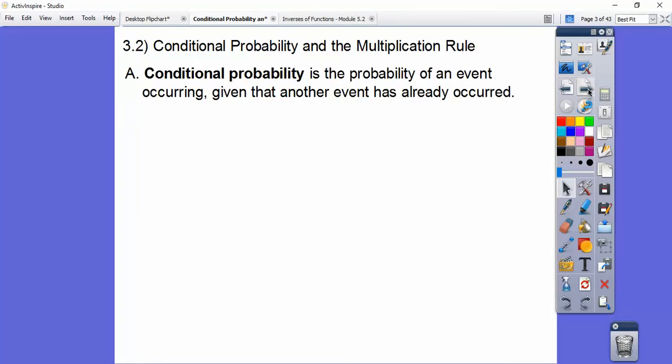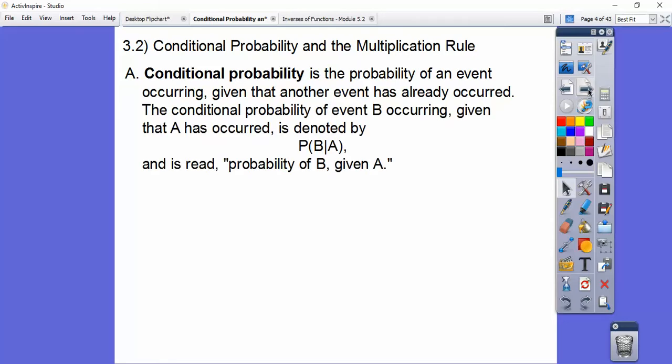Conditional probability is the probability of an event occurring given that another event has already occurred. So the conditional probability of event B occurring given that A has already occurred is denoted by this writing right here. This says the probability of B given that A happens.